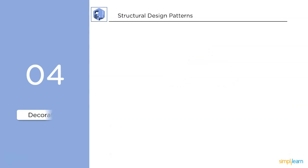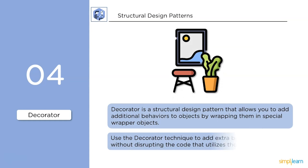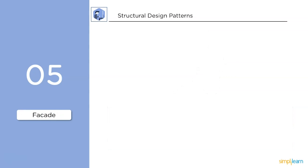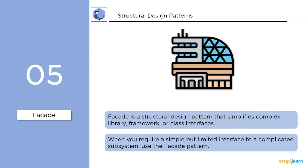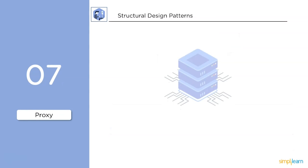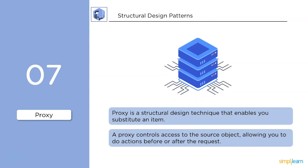The decorator pattern allows you to add behaviors to objects by wrapping them in special wrapper objects, adding extra behaviors without disrupting the code that uses them. The facade pattern simplifies complex libraries, frameworks, and class interfaces; we use it when you require a simple but limited interface to a complicated subsystem. The proxy pattern enables you to substitute an item — a proxy controls access to a source object, allowing you to perform actions before or after the request.